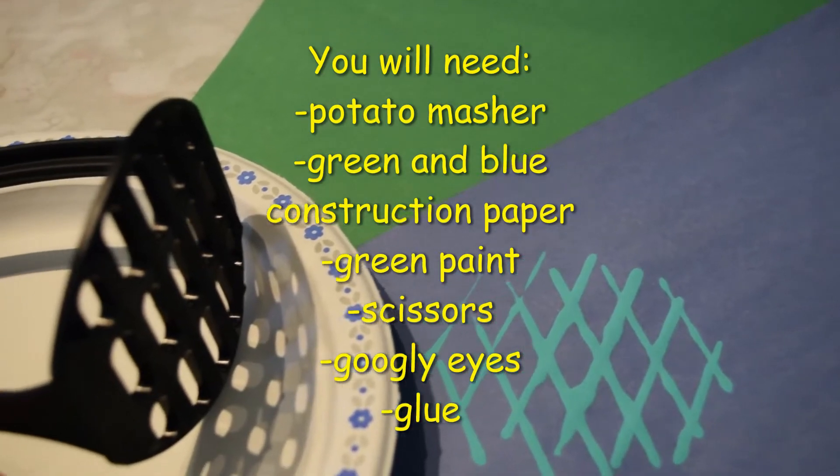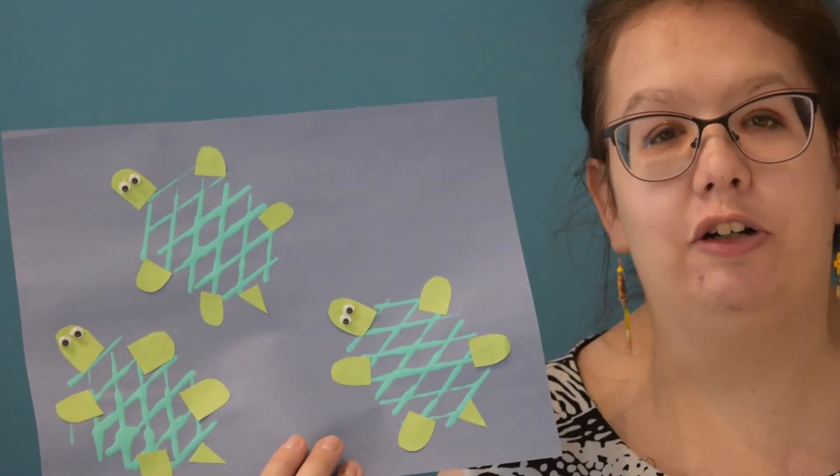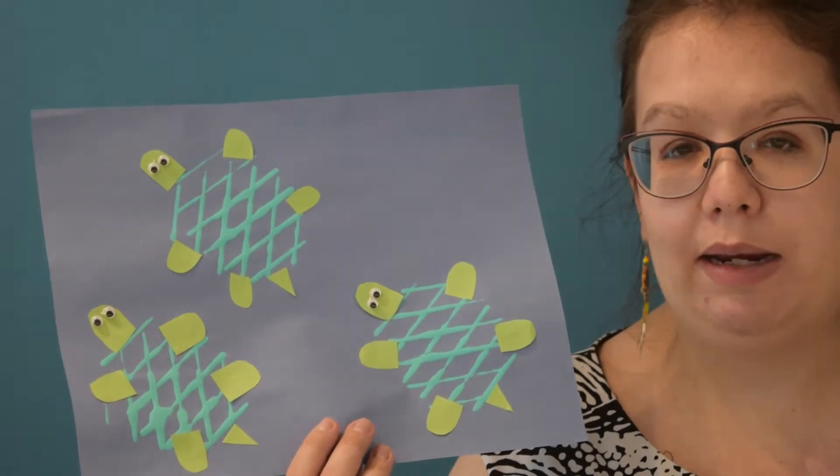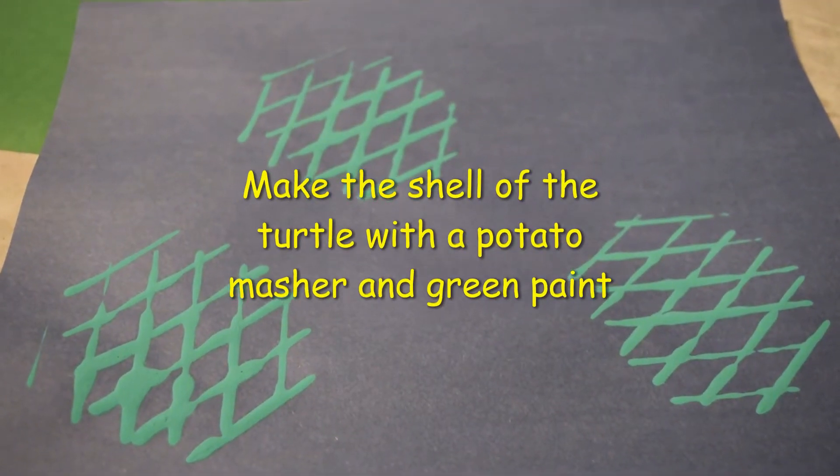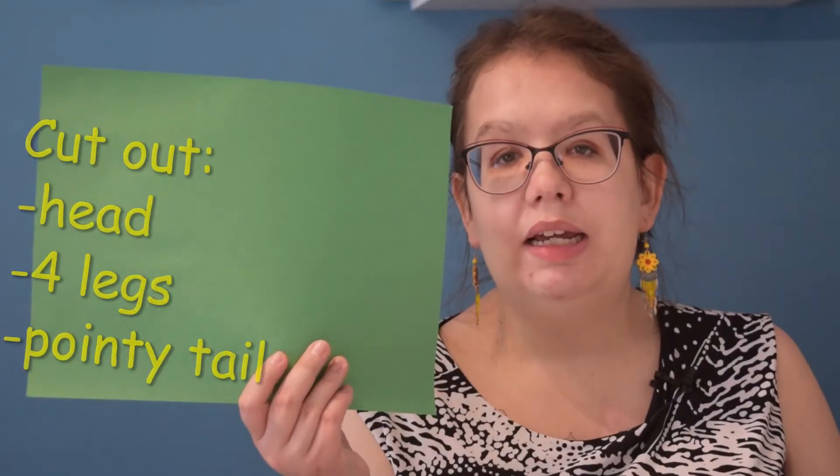Take a potato masher, dip it into green paint, and press it onto blue construction paper. Cut out a head.